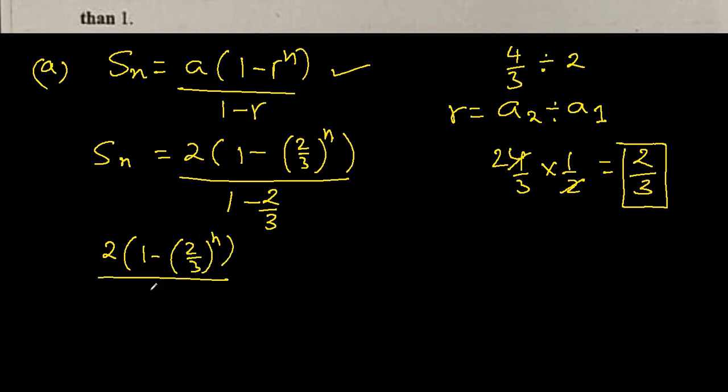This is the sum of first n terms. What is the next thing? Least value of n such that the sum to infinity exceeds the sum of first n terms by less than 1.